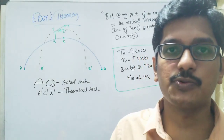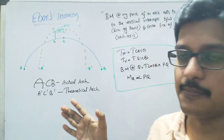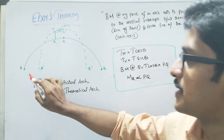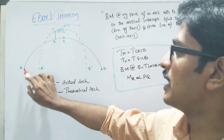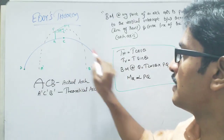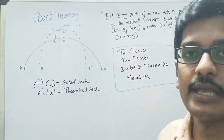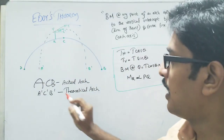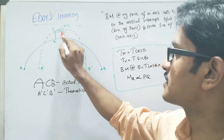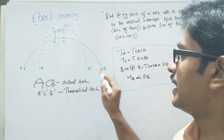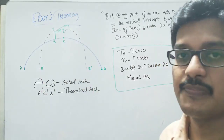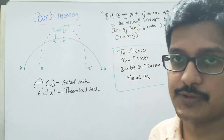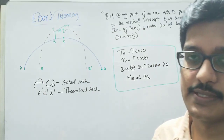We will explain through the diagram. Let us consider A, C, B to be the actual arc, and A', C', and B' to be the theoretical arc or line of thrust.